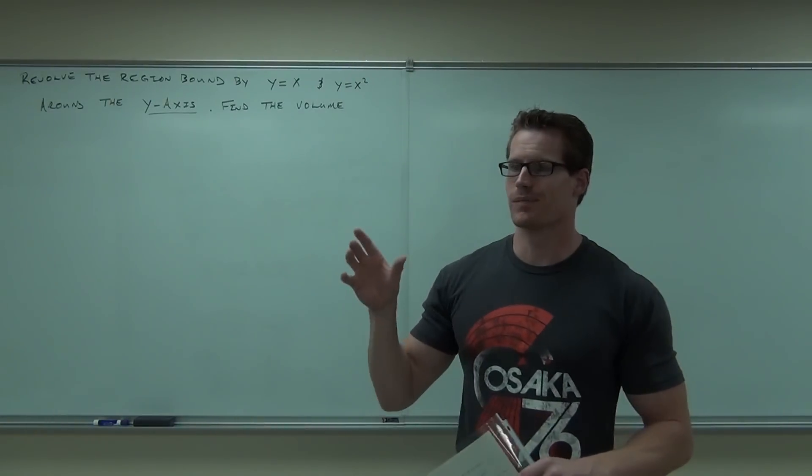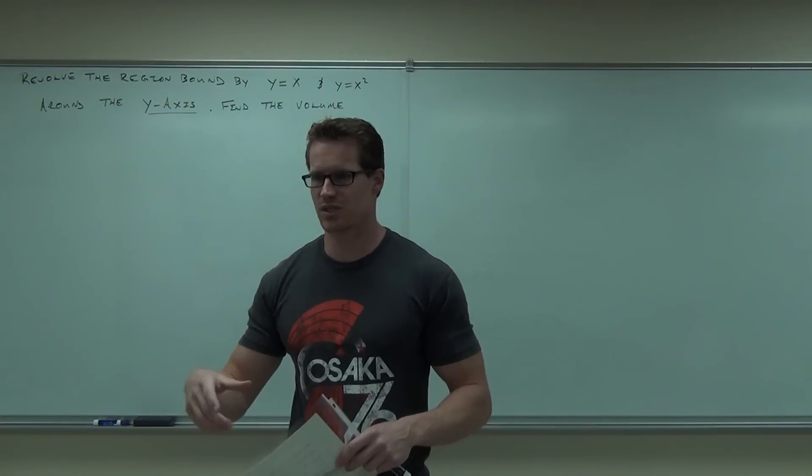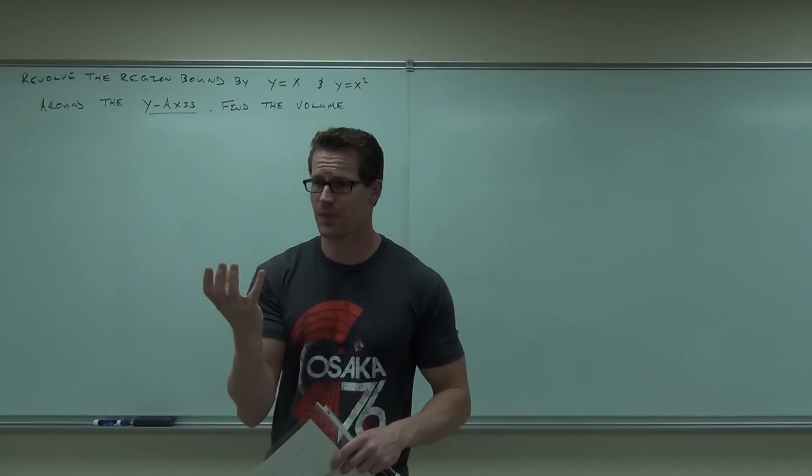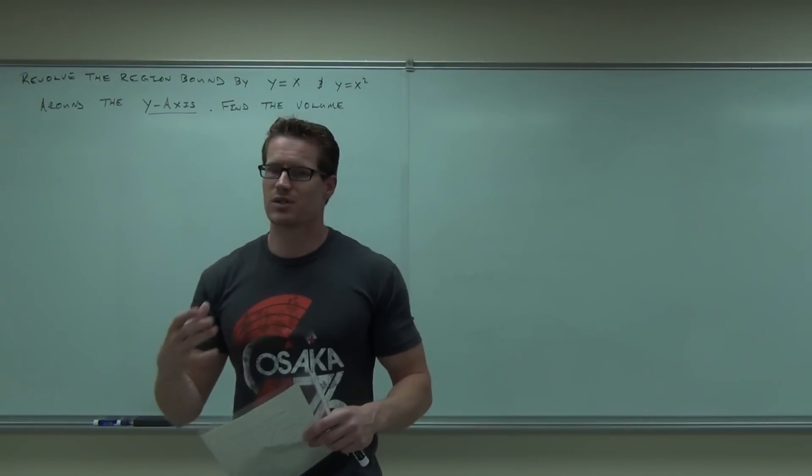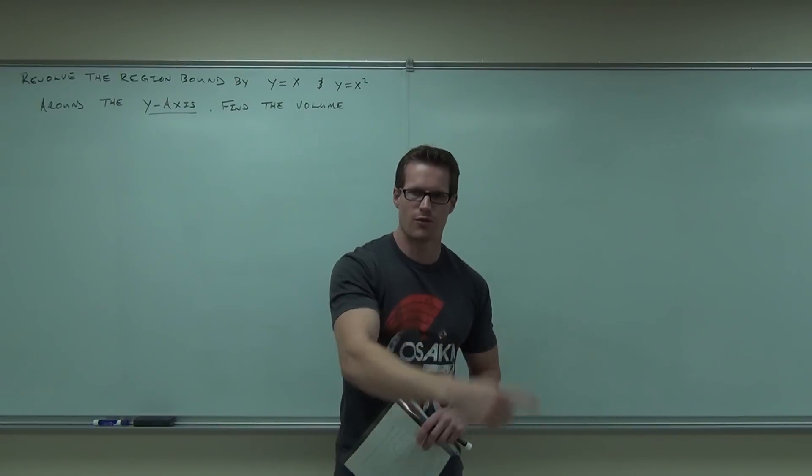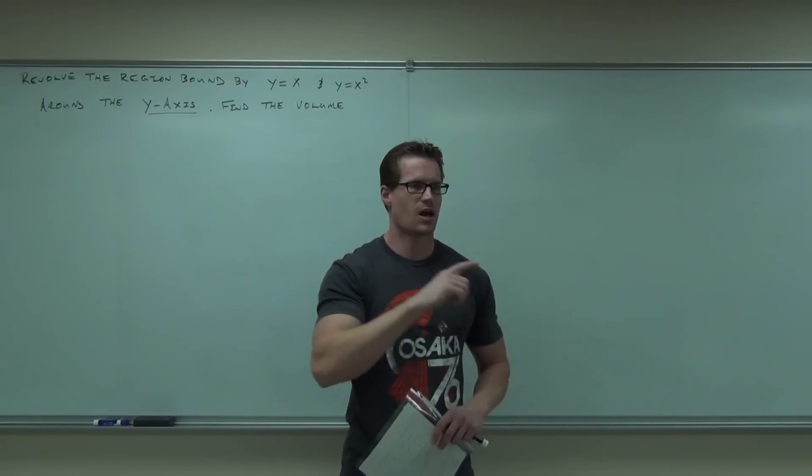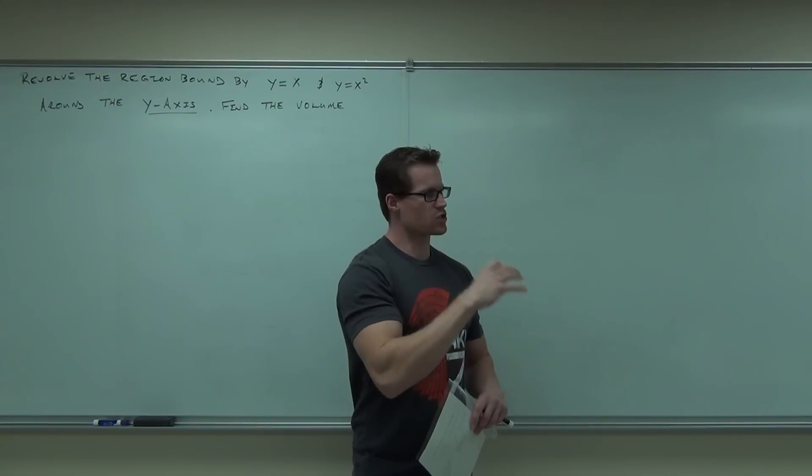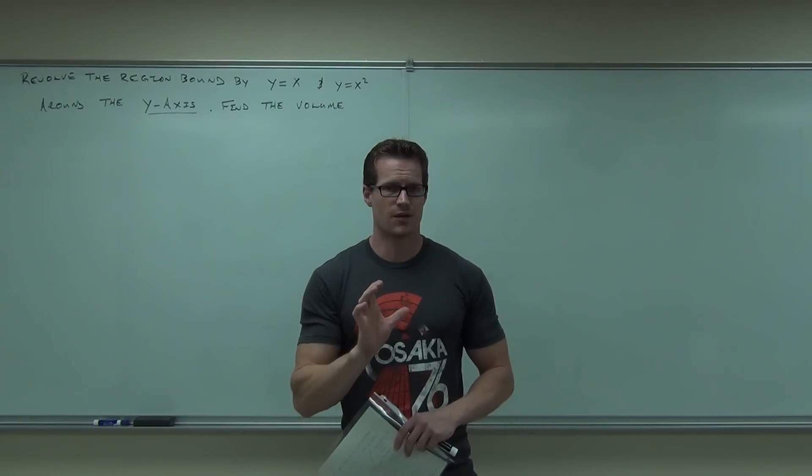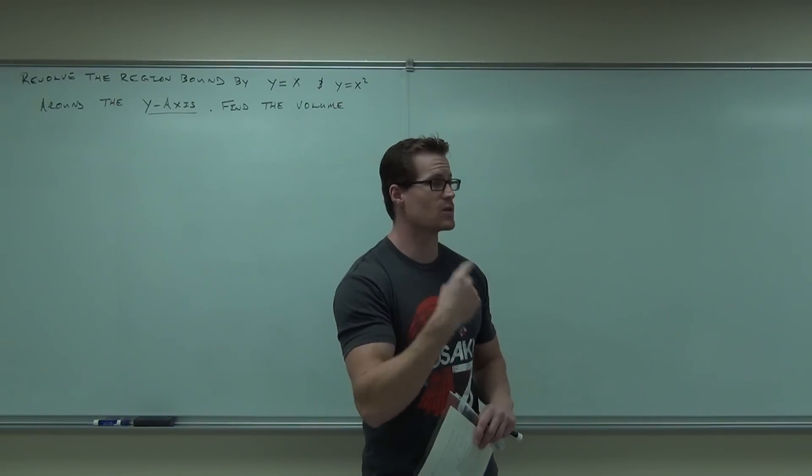We're continuing talking about how to do some volumes. We've covered disc method and washer method. We're just getting into the cylindrical shells method, which is the idea of cutting slices of cake out and finding the volume of each cylinder, then adding up all those cylinders. It's different than discs and washers because with discs and washers, whatever axis you're revolving around, that's what the functions need to be in terms of. Around the x-axis, in terms of x. Around the y-axis, in terms of y. The cylindrical shells method kind of flips that. If we're going around the y-axis, that's when you want it in terms of x. If you're going around the x-axis, that's when you want it in terms of y. It's backwards. That is confusing for a lot of people.